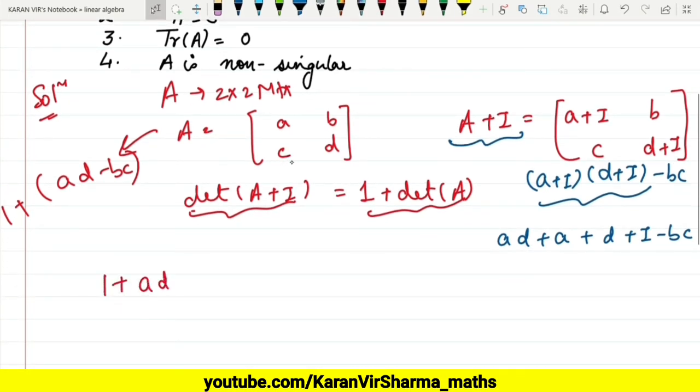So 1 + ad - bc... to be more precise, let it be i here. This is equal to ad + a + d + i - bc. So let's cancel out the terms.